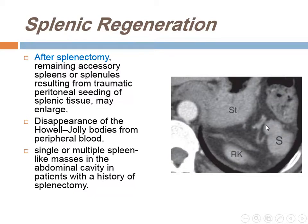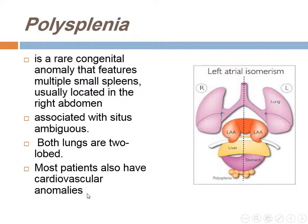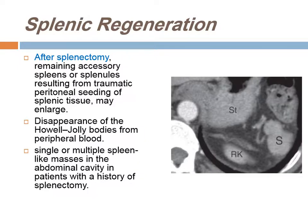Splenic regeneration: after splenectomy, the remaining accessory spleen or splenule resulting from traumatic peritoneal seeding of splenic tissue may enlarge. Disappearance of Howell-Jolly bodies from peripheral blood is a sign of splenic regeneration — it appears as single or multiple spleen-like masses in the abdominal cavity with history of splenectomy. Remarkably, some cases show splenic regeneration so marked that the spleen has a normal shape in its normal location even after the patient has had a splenectomy.